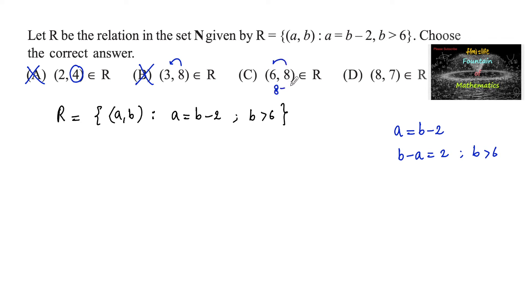Third option (6, 8): the difference between 8 and 6, that is 8 minus 6, is equal to 2, and your b is greater than 6. Eight is greater than 6, so both conditions are satisfying.